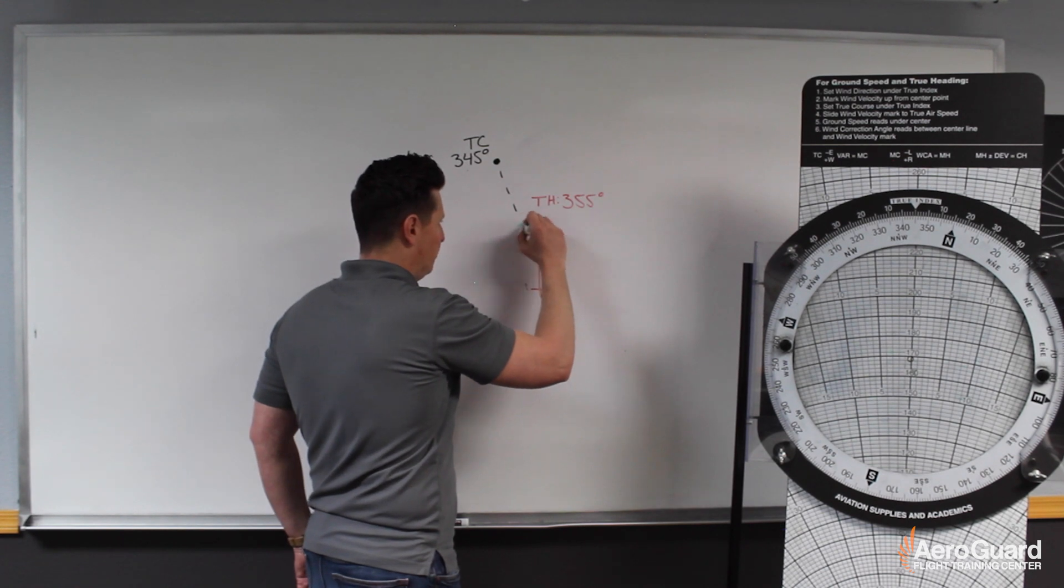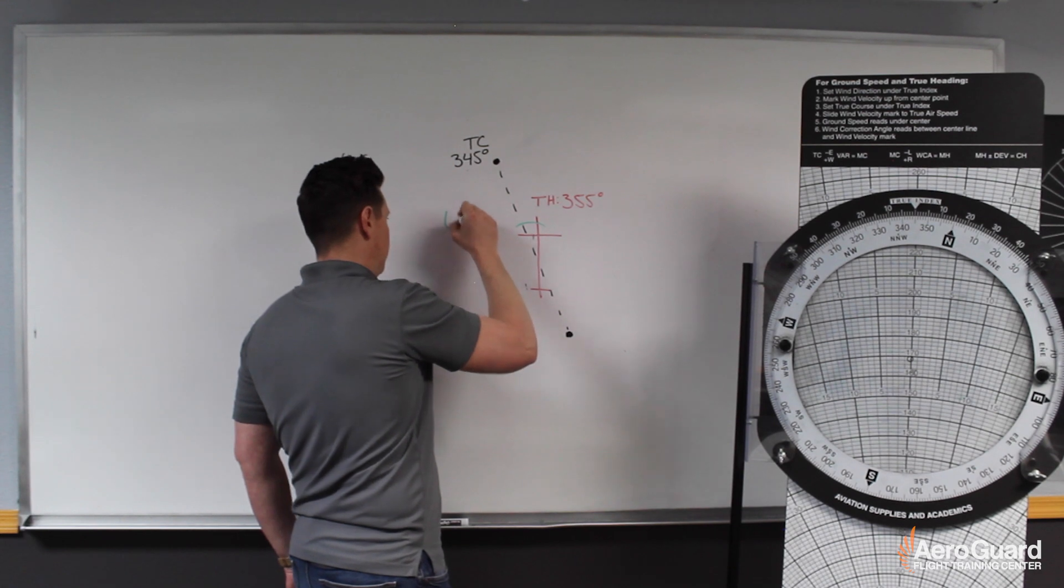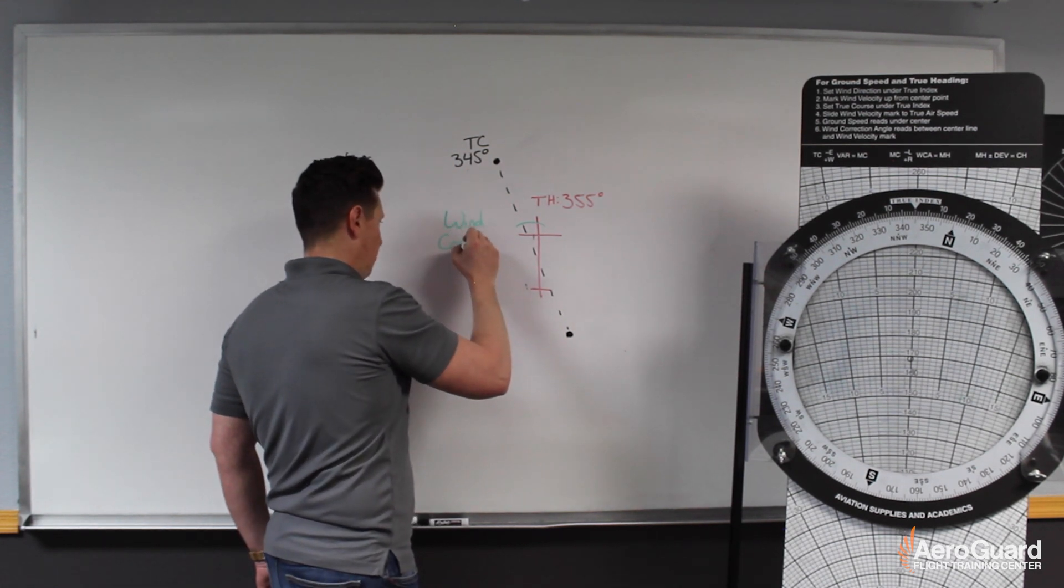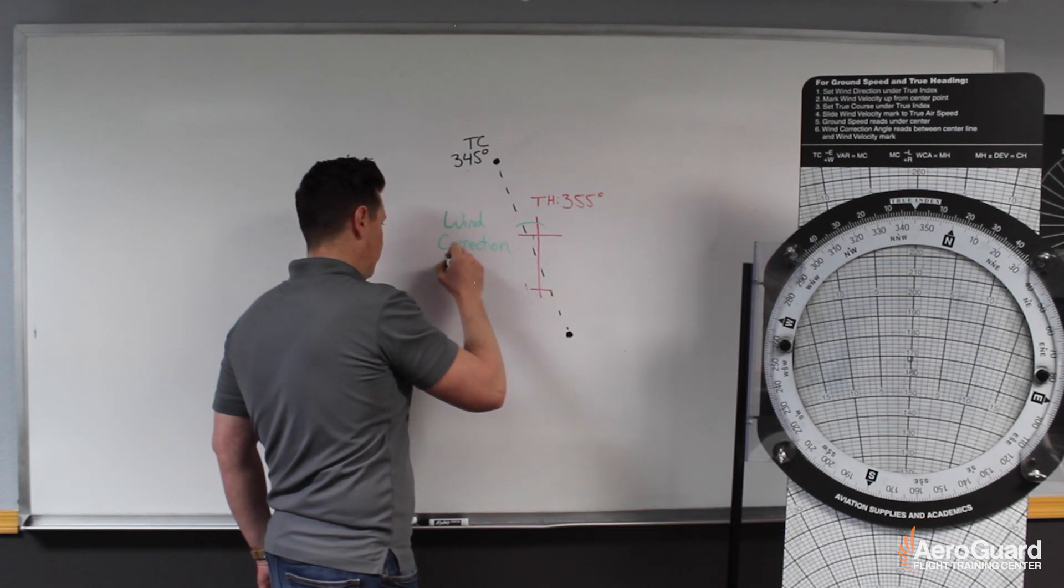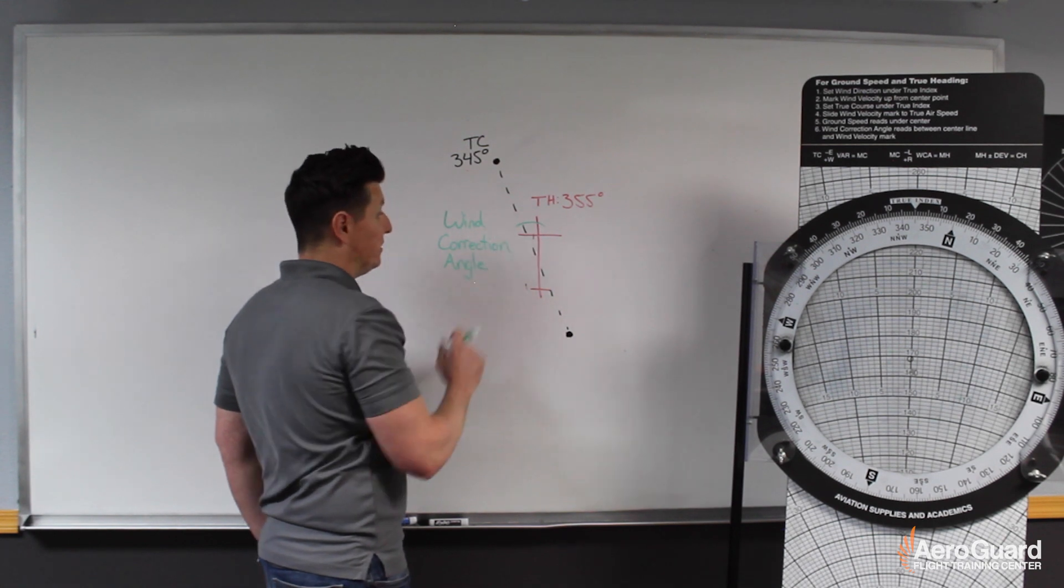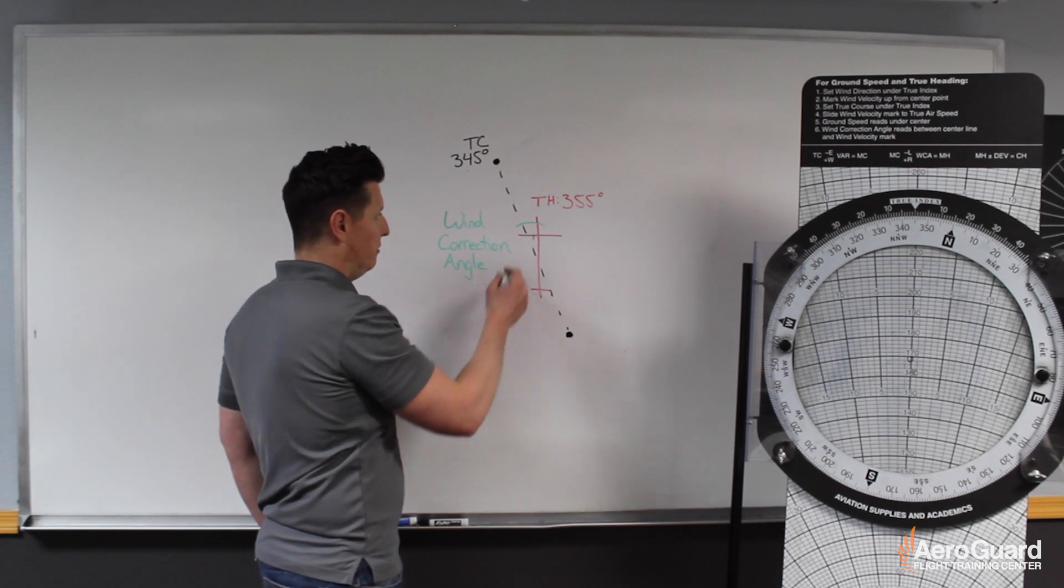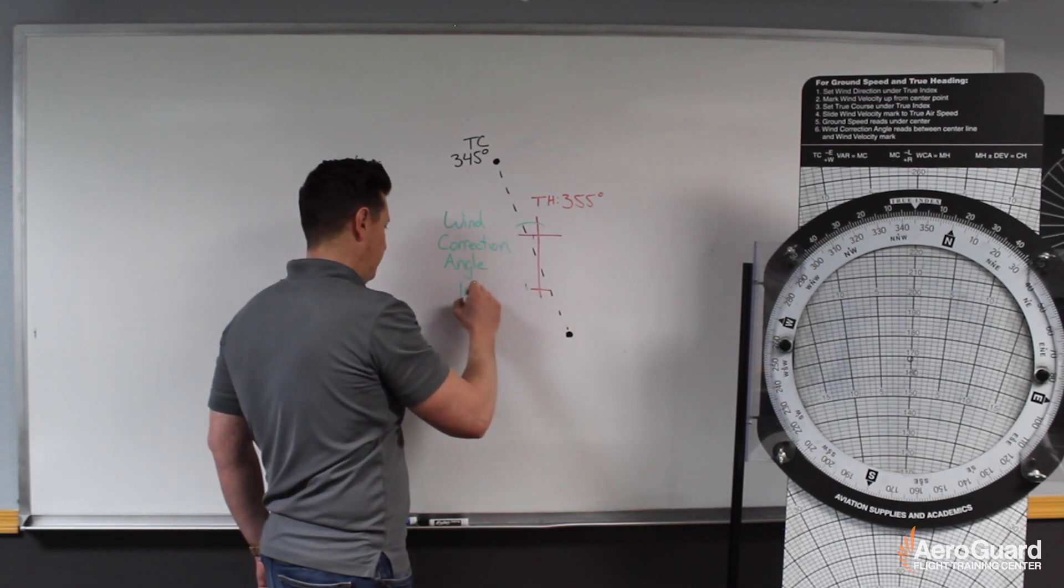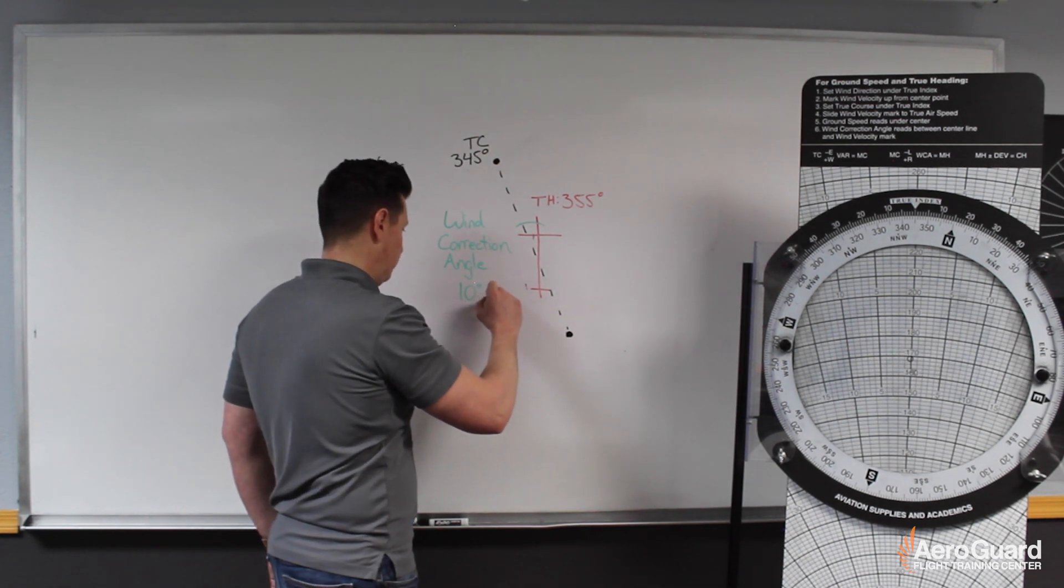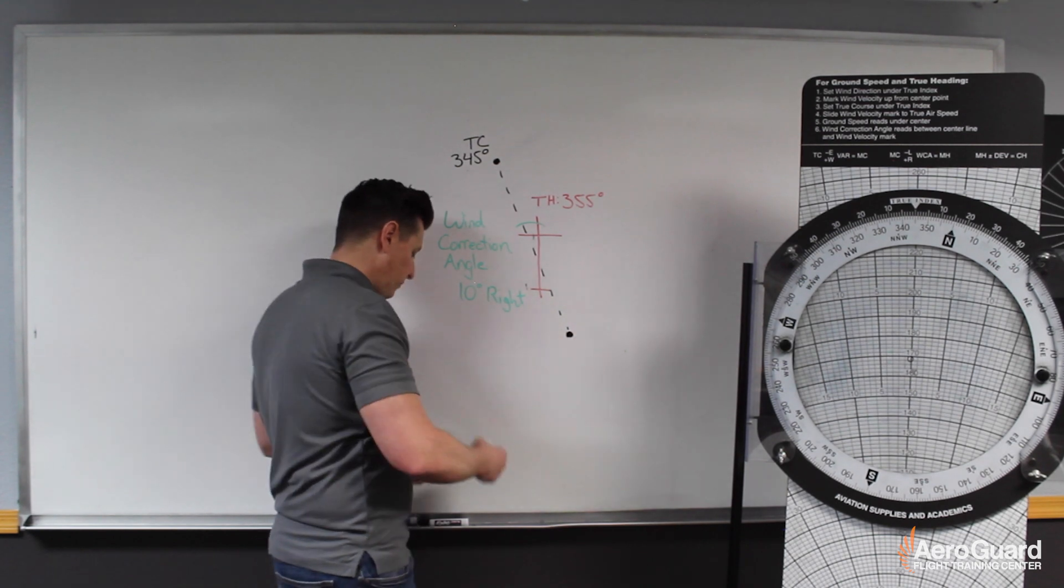That angle between the nose of our airplane and the course we're trying to fly, that's known as the wind correction angle. And in this example, we see that our wind correction angle is about 10 degrees, right? So this angle is about 10 degrees, and it's 10 degrees to the right of the course. So I'll write 10 degrees right. Okay.